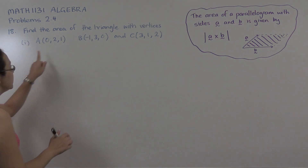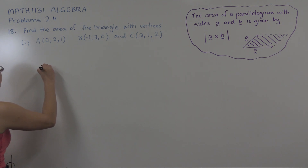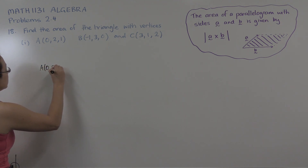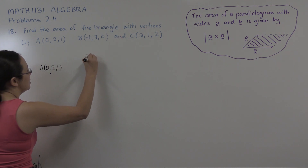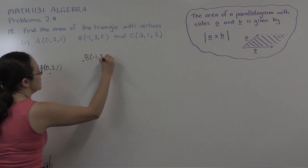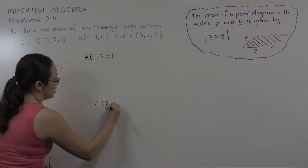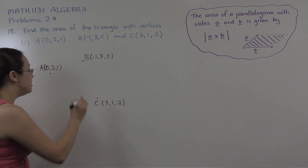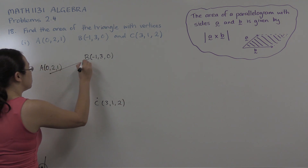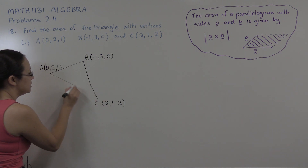In this particular question we have our vertices in three-space: A is (0, 2, 1), B is (-1, 3, 0), and C is (3, 1, 2). Our aim is to find the area of triangle ABC.